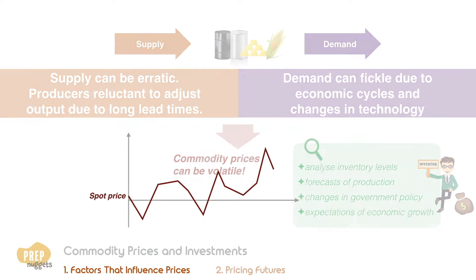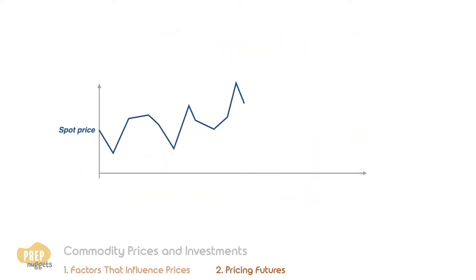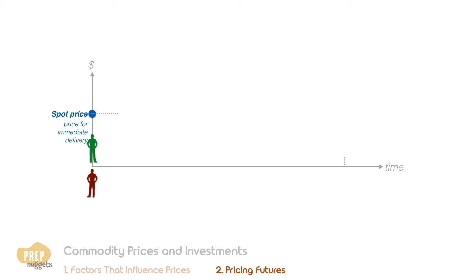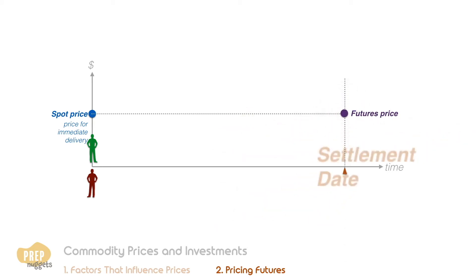What we've been discussing so far is based on the spot price, which is the price for immediate delivery of the commodity. In our last lesson, we mentioned that buyers and sellers can agree on a fixed price for delivery of the commodity at a specified date in the future. Let's now learn how commodity futures are priced.